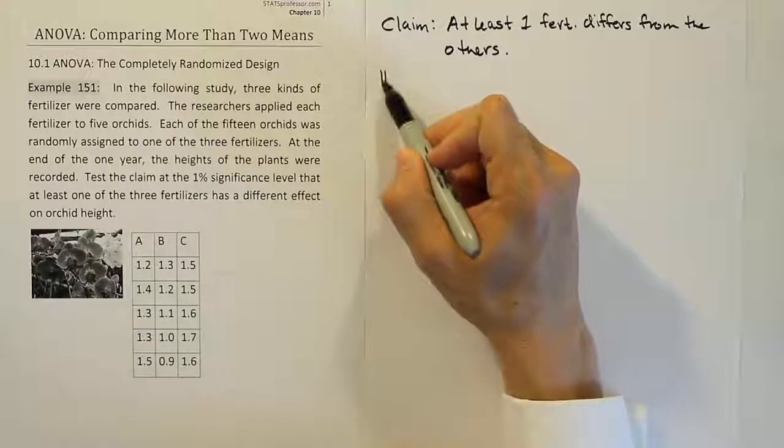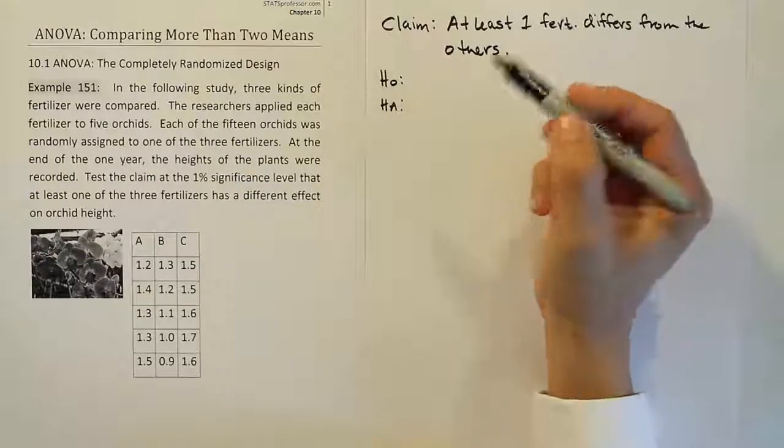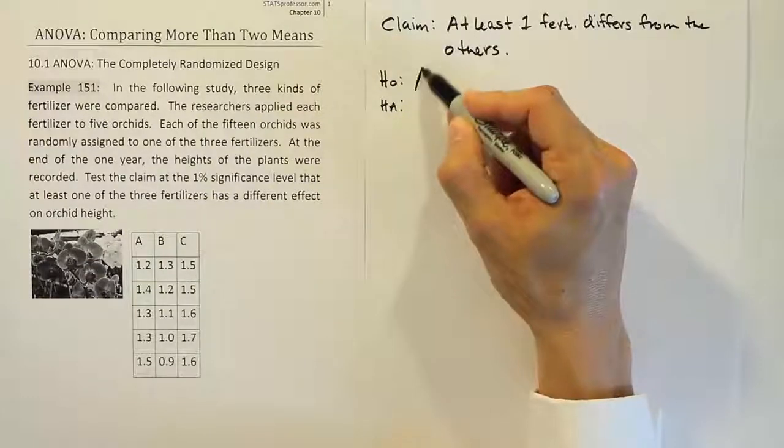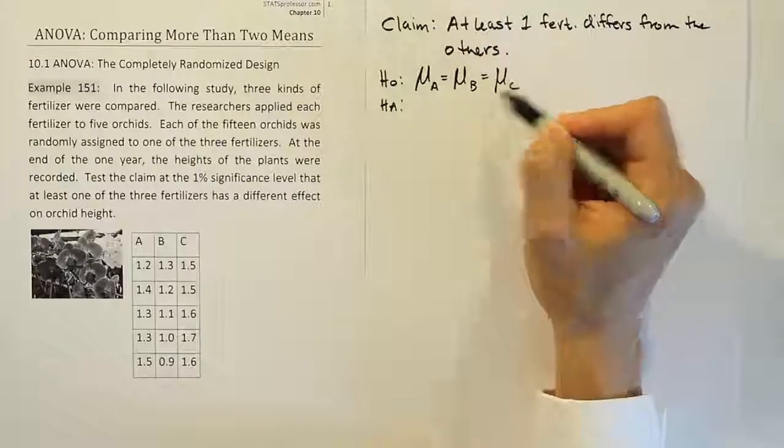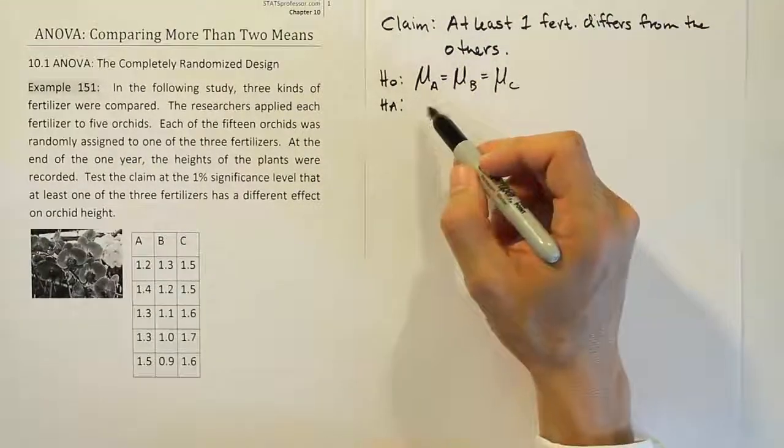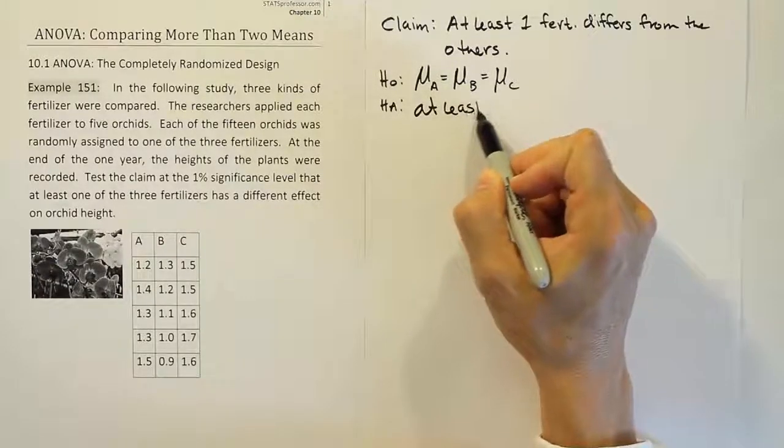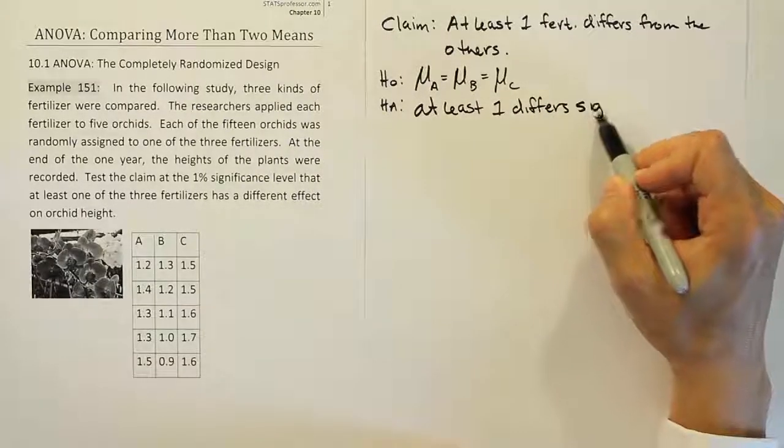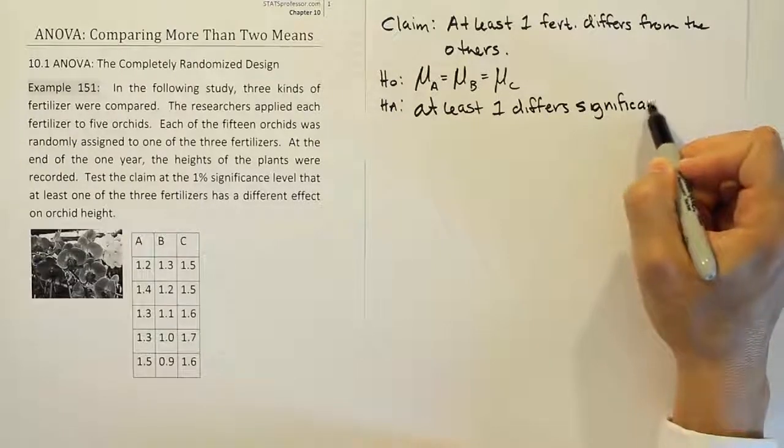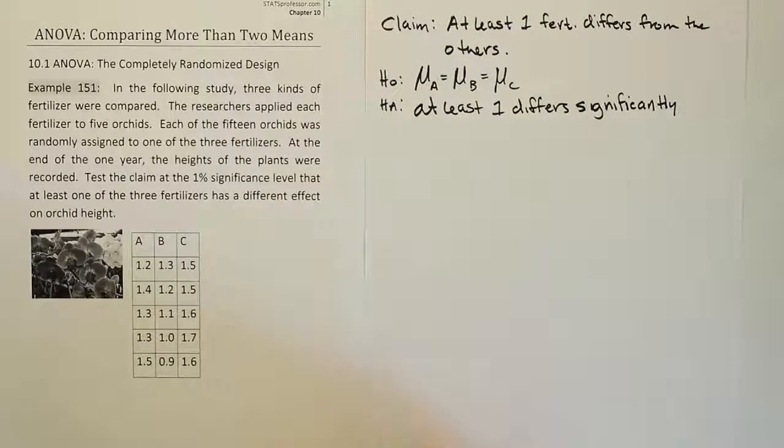Then from there, we're going to do H0 and HA. Now in these problems, the H0 and the HA are always the same. You never have to change them. So in this case, it's just going to be that all the means are equal. In this case, we have three means. So that's the only thing that's specific to this problem. But we always have an H0 where all the means are equal versus at least one of them are different, right? So at least one differs significantly from the others.